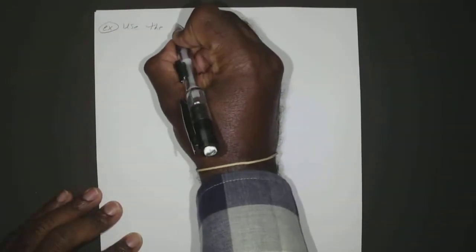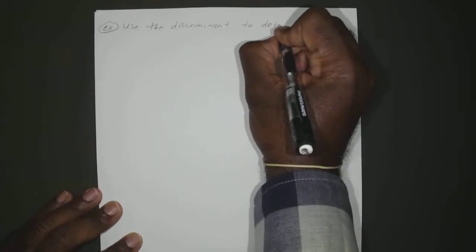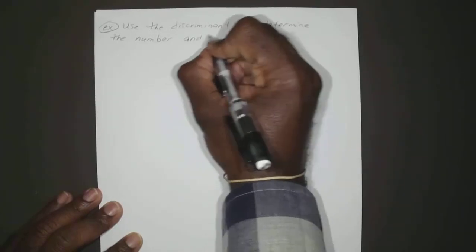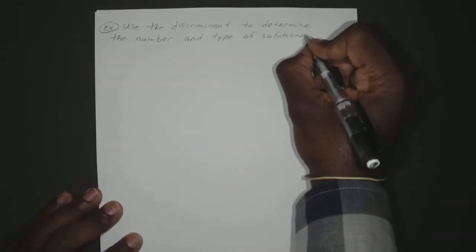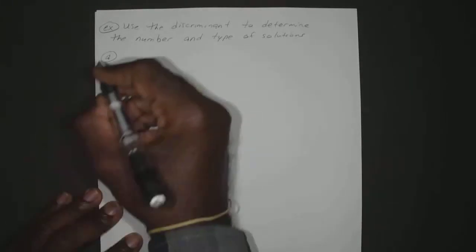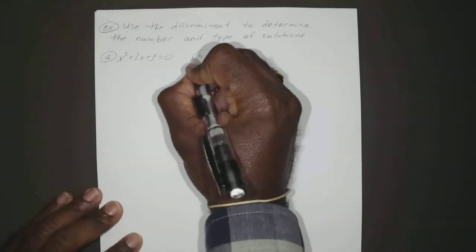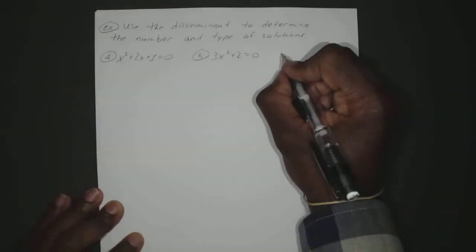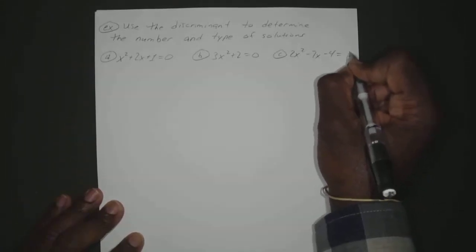Use the discriminant to determine the number and type of solutions. So for problem A you have x squared plus 2x plus 1 equals 0. For problem B you have 3x squared plus 2 equals 0. And for problem C you have 2x squared minus 7x minus 4 equals 0. We don't have to solve them — we just have to find out how many solutions each one has.